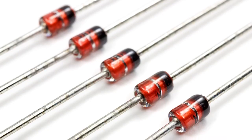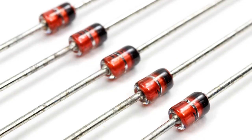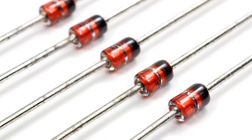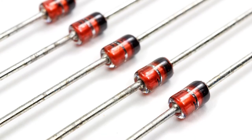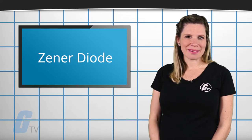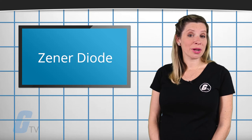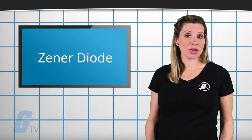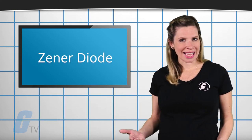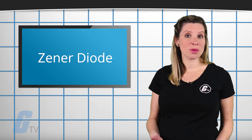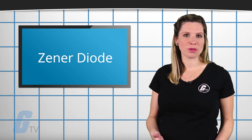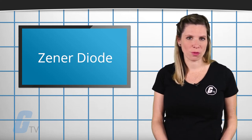Zener diodes are widely used as voltage references and as shunt regulators to regulate the voltage across small circuits. When connected in parallel with a variable voltage source so that it is reverse biased, a Zener diode conducts when the voltage reaches the diode's reverse breakdown voltage.